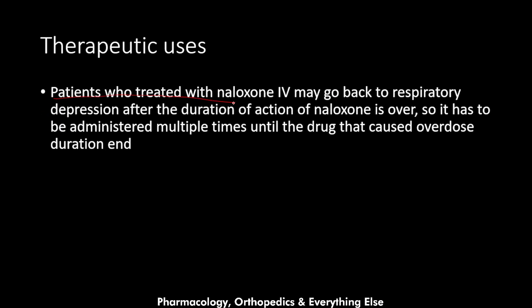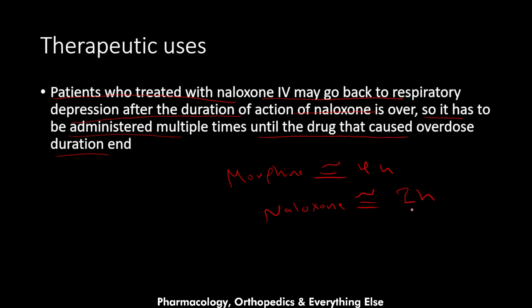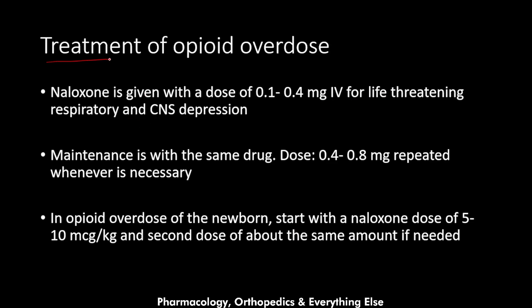Patients treated with naloxone intravenously may return to respiratory depression once the duration of action of naloxone ends, so it must be administered multiple times until the causative opioid's duration of action wears off. For example, morphine has a duration of action of about four hours while naloxone lasts about one to two hours. Once naloxone wears off, morphine returns to the receptors, causing the patient to relapse into respiratory depression, requiring another dose of naloxone.